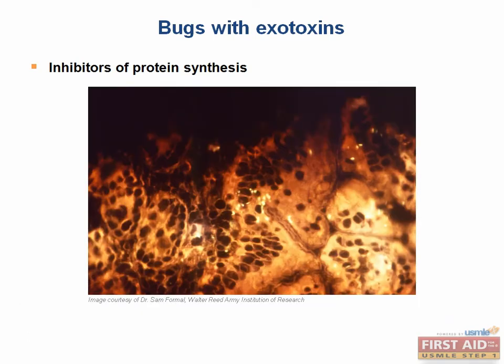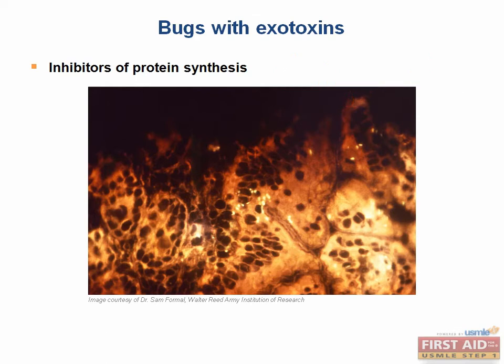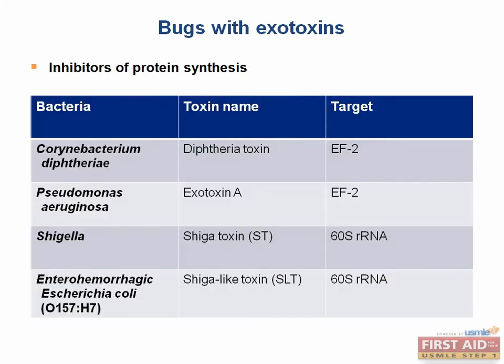Shigella species also produce an exotoxin which inhibits protein synthesis. The Shiga toxin functions by inactivating the 60S ribosome by physically removing an adenine group from the rRNA. Note that Shigella is an invasive bacteria, so it will penetrate the mucosa and cause cell death.